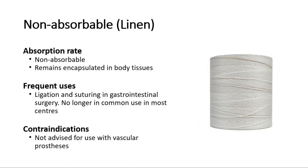Next is linen. It was used for ligation and suturing in gastrointestinal surgery. However, it is no longer in common use in most centers. For contraindication, it is not advised for use with vascular prostheses.